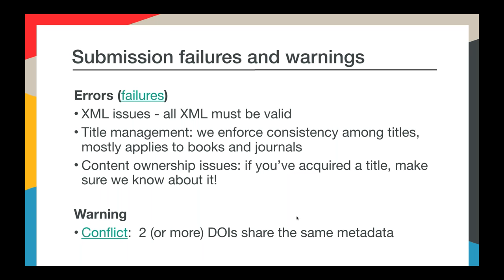Your file might also fail because of an issue with your title. We try to make sure that the titles you submit are consistent. There may also be permission issues — journal titles change hands quite often, so if you've added or sold a title, please make sure we know about it so that we can make the appropriate ownership changes on our end. We do have one major type of warning: if the metadata in your record matches something that's already in our system, we'll put what we call a conflict warning in your log, notifying you that you're duplicating something. If something's flagged as a conflict, it means either that you've duplicated something or you're not sending us enough metadata to conclusively identify something.